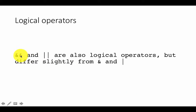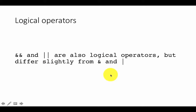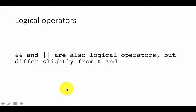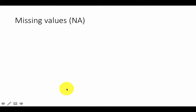There are also two other operators — double AND (&&) and double OR (||) — but they differ slightly from the single & and | operators, and we will look at them later. Right now we are only going to look at the single AND and OR versions, as they are slightly different in terms of how they operate.